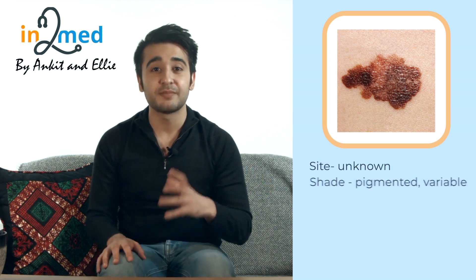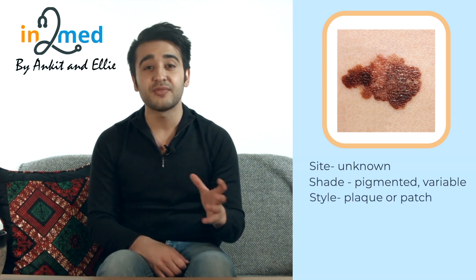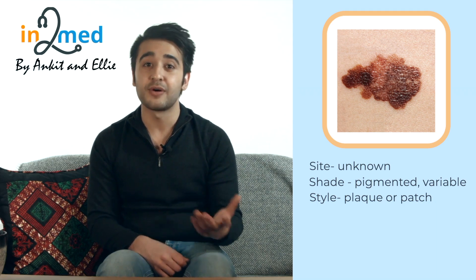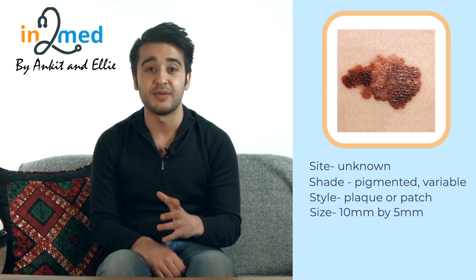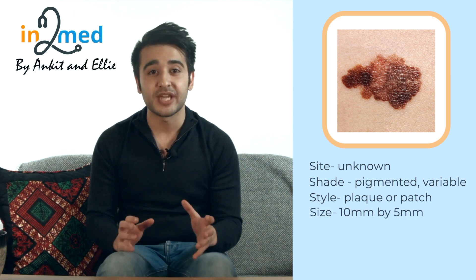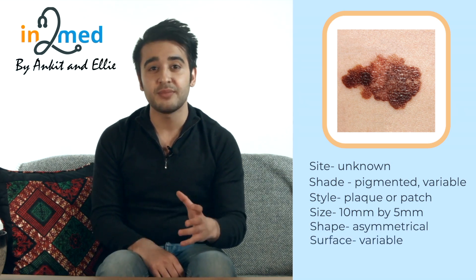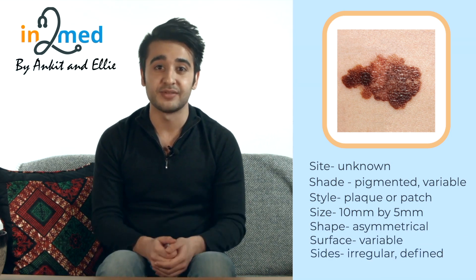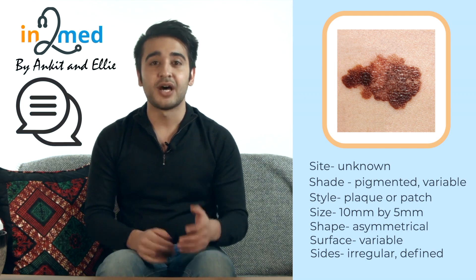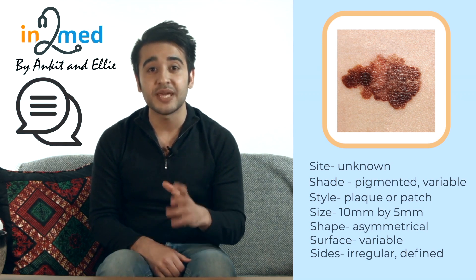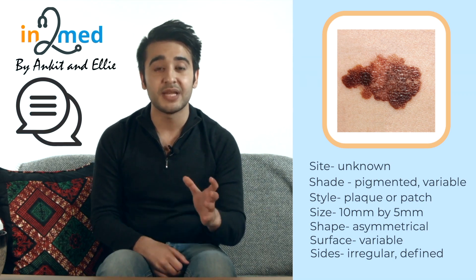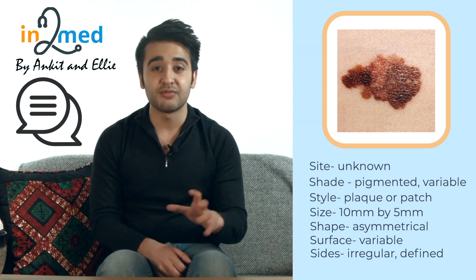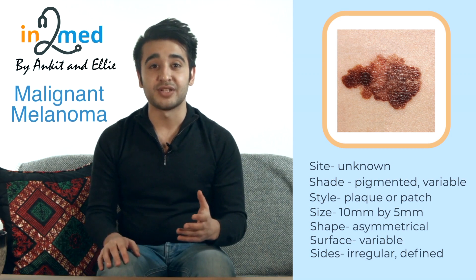So let's put this into practice. How would we describe this first lesion using the seven S's? The site is unknown. The shade is pigmented with many variations in colour. The style — from the photo it's hard to tell if it's raised, so we could say either a plaque or a patch. The size appears to be about 10 millimetres by 5 millimetres, though I'd want to formally measure this. The shape is asymmetrical with an irregular outline. The surface looks smooth in the middle and slightly rough around the borders. The sides have irregular but clearly well-defined edges. Putting this together: 'This is a photo of an unknown location of skin showing a pigmented patch. It has variations in colour, is sized about 10mm by 5mm, is asymmetrical, smooth in the middle, slightly rough around the edges, and has irregular borders.' My clinical impression is a malignant melanoma.